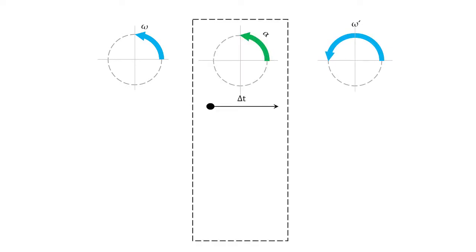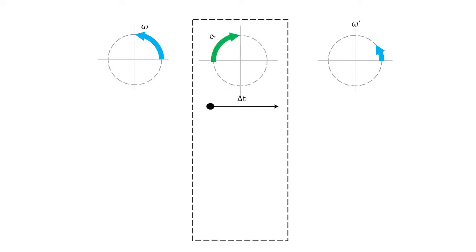To recap: if I'm going in the positive direction and I speed up, I had to have had an angular acceleration in the direction of the angular velocity vector. If I have an angular acceleration, I had to have had an effective torque going in the same direction as the angular acceleration — and if it's causing it to speed up, it has to be in the direction of the angular velocity vector. If I'm going in the positive direction and slowing down, the angular acceleration has to be negative — opposite the direction of the angular velocity vector — and the effective torque is always in the same direction as the angular acceleration.